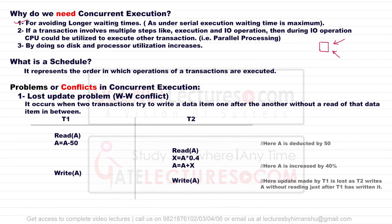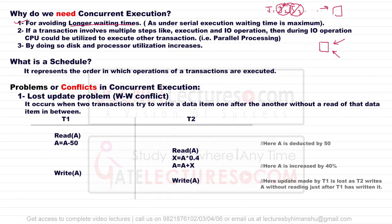The first reason we need concurrent execution is to avoid longer waiting times. In serial execution, if you have jobs J1, J2, J3, etc., you must finish one job before starting another — for example, finish J3, then start J2, then start J1. If these jobs do not overlap, there is no problem.